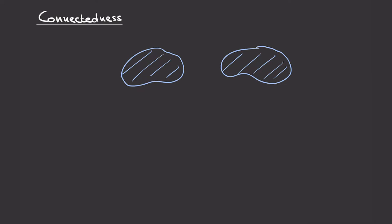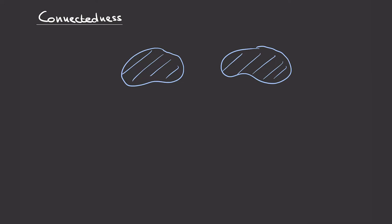Connectedness is a property of topological spaces that pretty much describes what it sounds like. For example, if I draw this space consisting of two disjoint parts, then we would probably all agree that this space is not connected. If we wanted to formalize this intuition into a definition, we could proceed in many different ways. One way would be to say that this space consists of these two parts and hence decomposes into the disjoint union of two other spaces, and so is not connected.